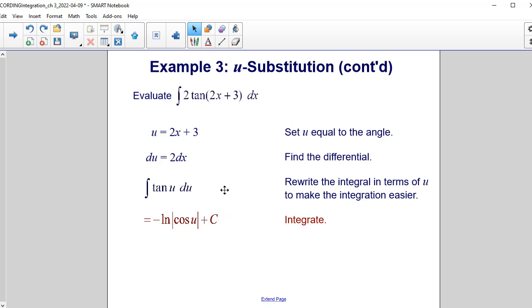If you were not able to find it on a reference sheet, here's a little hint for you. You can rewrite the tangent of u as sine u over cosine u. And remember that the derivative of cosine is minus the sine. So we're real close to having a derivative over its original function. And when you have a derivative over its original function, that's the natural log.